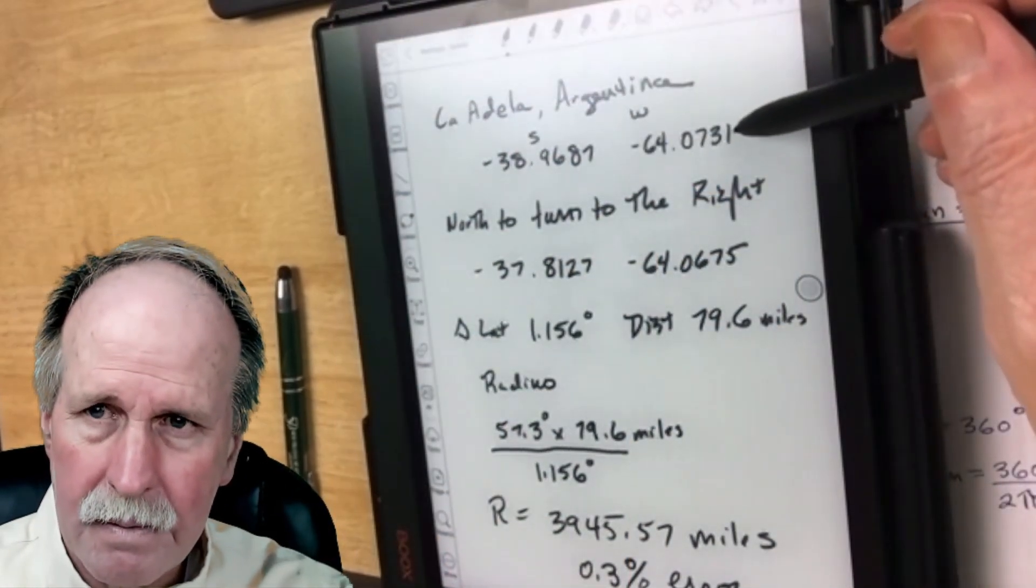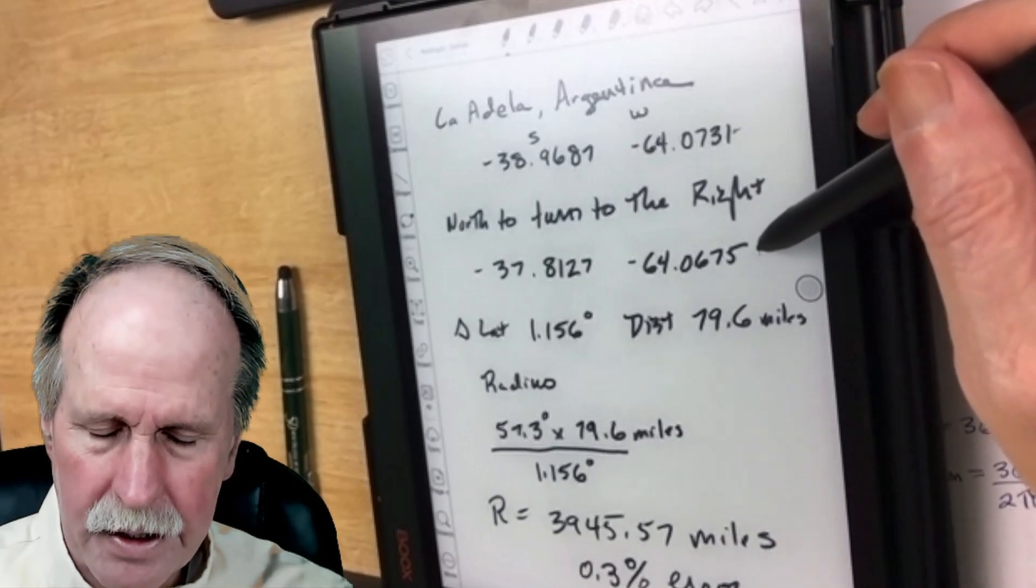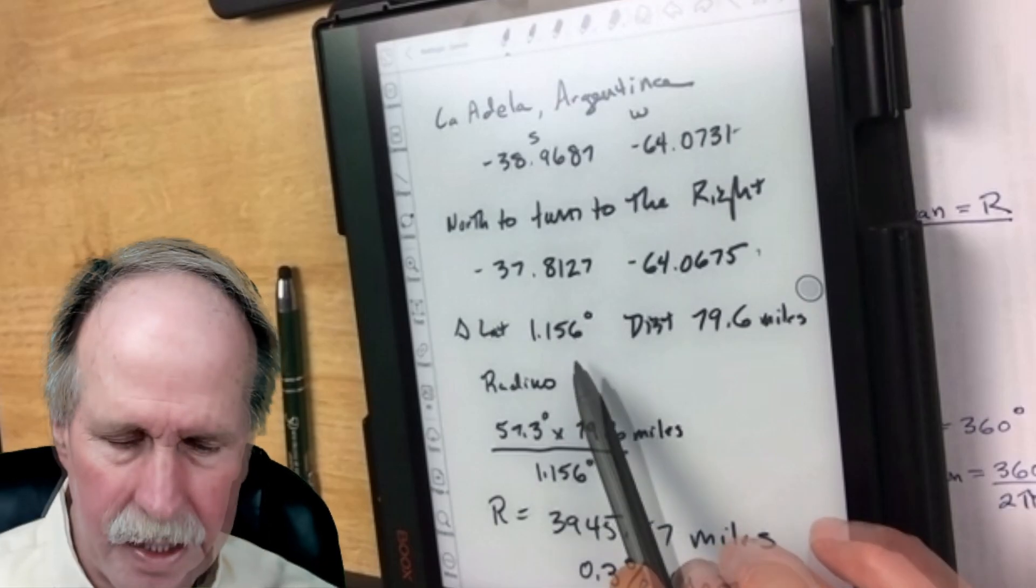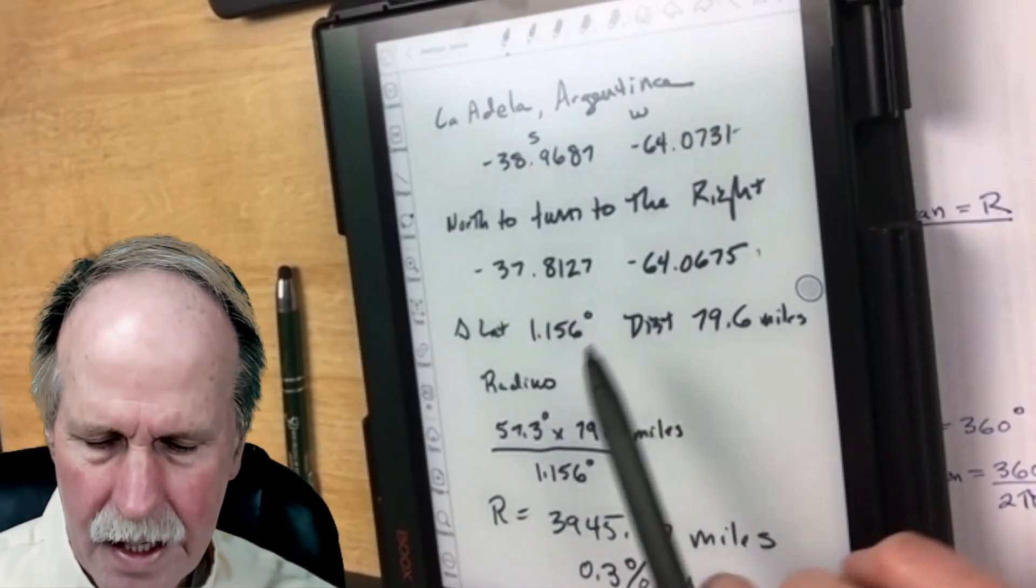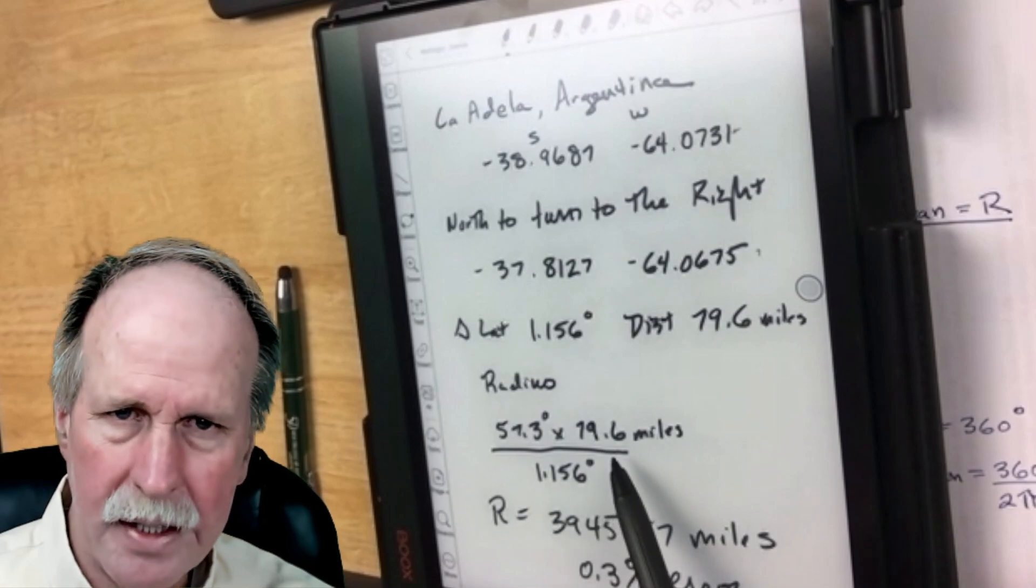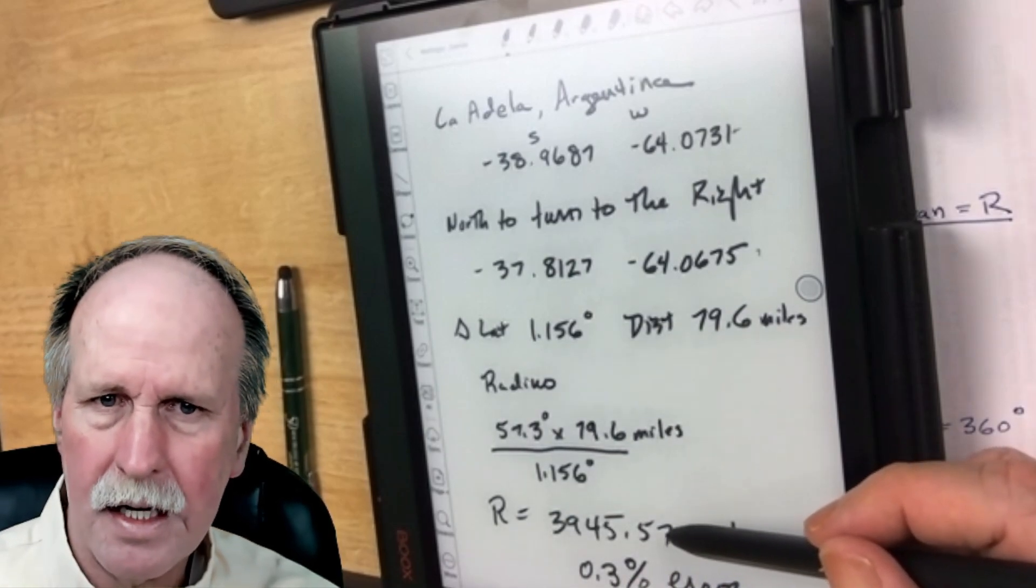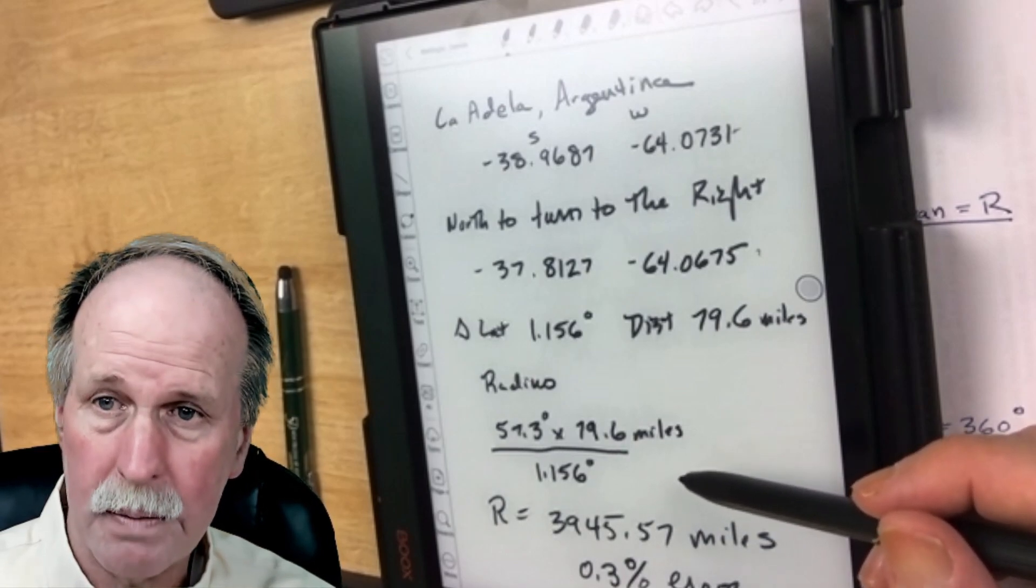Let's go ahead and find out the data on it. Here's the coordinates of the southern end of the route. Here's the coordinates of the northern end of the route. The difference in latitude is 1.156 degrees, and the distance is 79.6 miles. We did the same calculation that we did up in Denver. The radius this time comes out to 3945.57 miles. It's less than a 0.3 percent error.